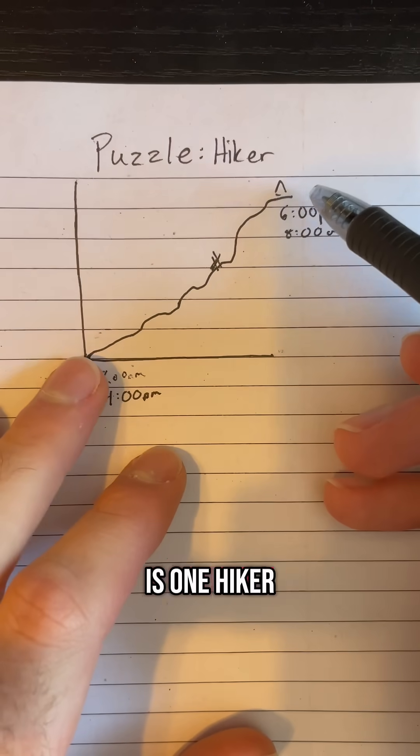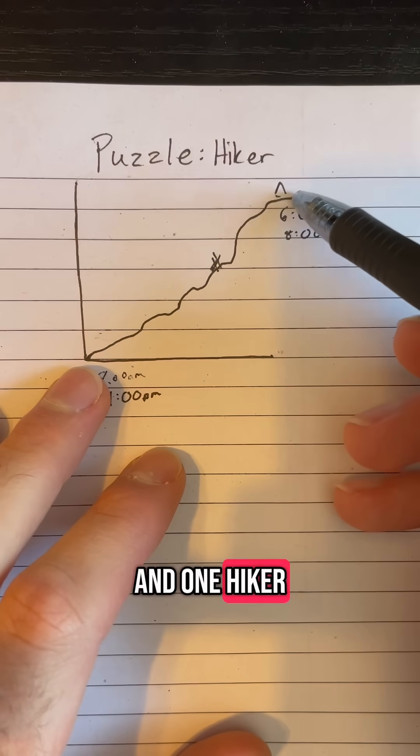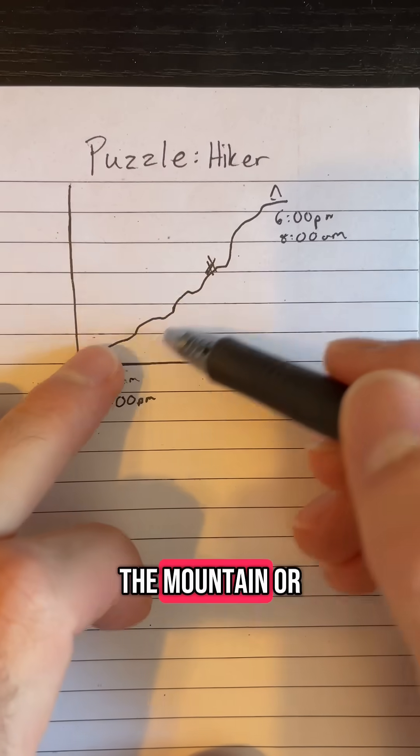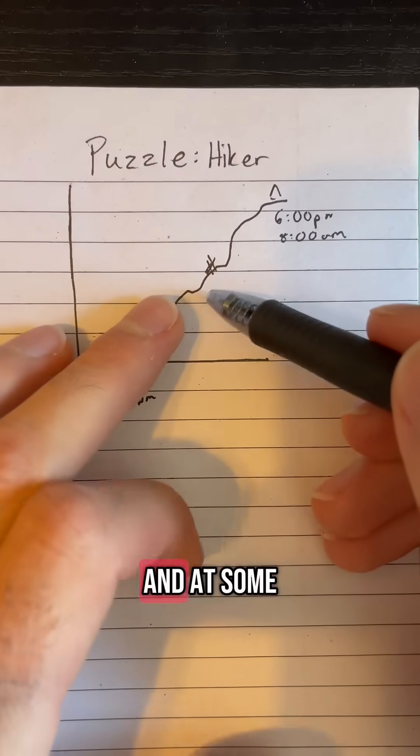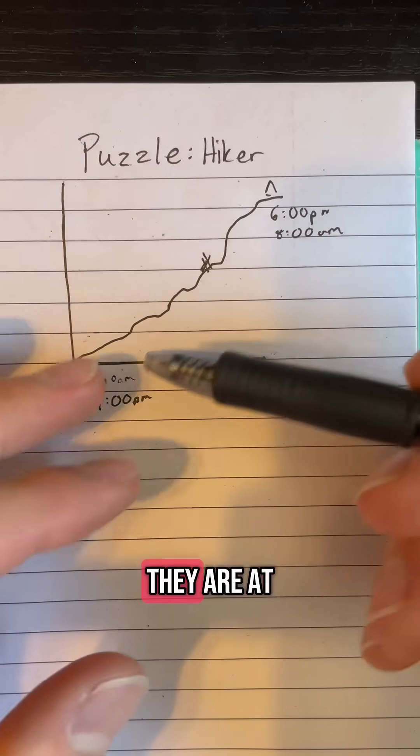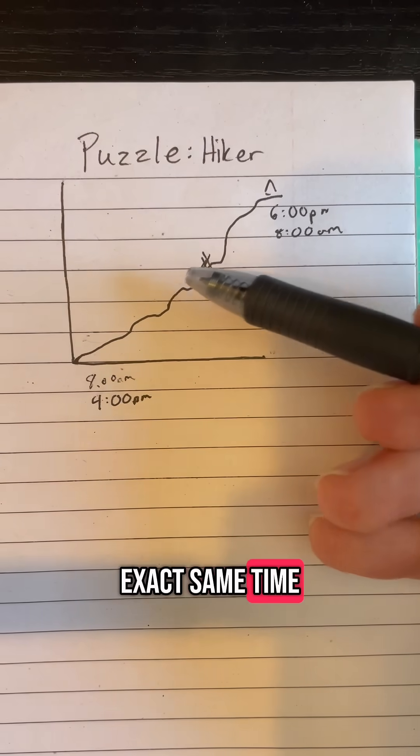...just imagine there is one hiker starting at 8am on the bottom, and one hiker starting at 8am at the top, and they are both going down the mountain or up the mountain respectively, and at some point on the mountain, they must cross paths, and when they cross paths, they are at the exact same spot on the mountain at the exact same time.